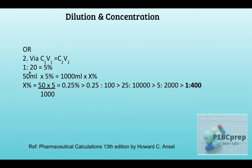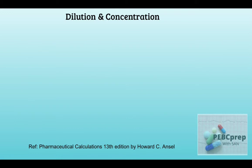The next way to solve this same problem is using the C1V1 = C2V2 formula. We have 1:20 which equals 5 percent, so C1 = 5 percent and V1 = 50 mL, V2 = 1000 mL. When we calculate, we get 0.25 percent, which converts to the same 1:400 ratio strength. So you can solve either way.